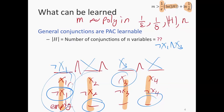A student asks: does it have to be polynomial in all of those? Yes, it has to be polynomial in all of them. A monotone conjunction is a conjunction that does not allow negations — no feature should be negated.